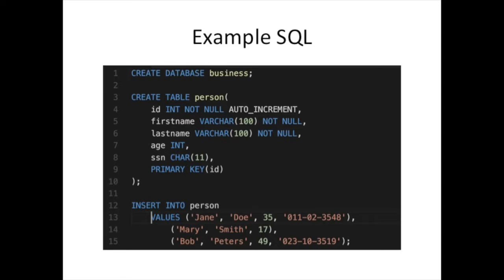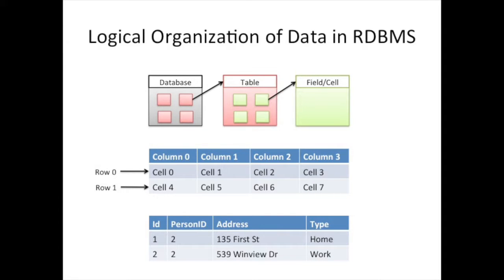A note on what we've learned so far: in a relational database management system, you have a database, and one database contains one or more tables. Tables have fields organized into columns and rows. A column is vertical — for example, all the cells in column zero would be cell zero and cell four. All the cells in column two would be cell two and cell six. A row is horizontal — all the cells in row zero would be cells zero through three. That maps back to how information is organized in the database, as shown in the sample table we used.